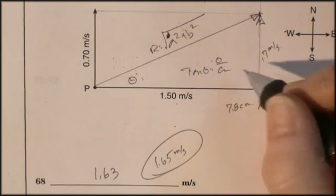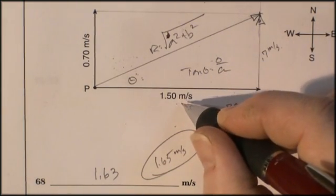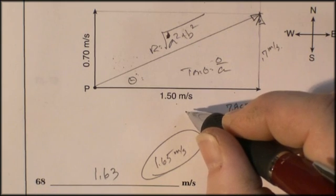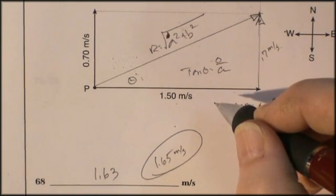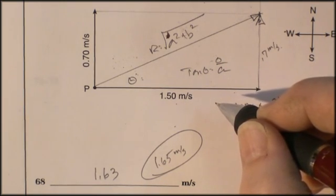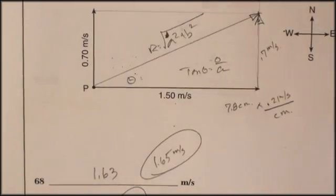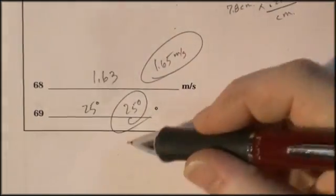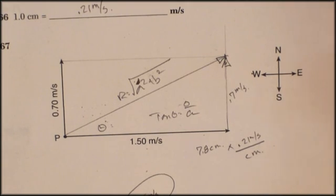Or once again, I can use my trig function and say 0.7 divided by 1.5 is 0.4. And then take the inverse tangent of that. Let's see. Inverse tangent. And I get 25 degrees. The answers are down there. All right. And that's questions 66 through 69. So let's see.